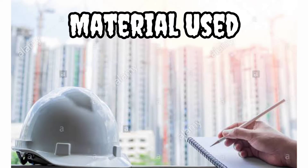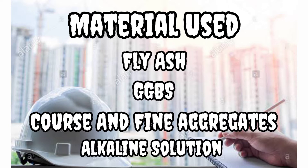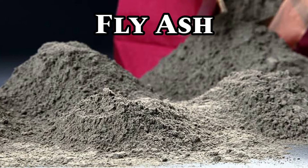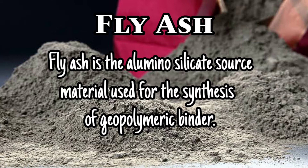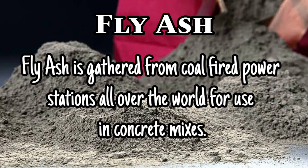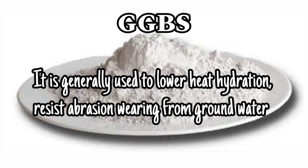Materials we used are fly ash, GGBS, coarse aggregate, fine aggregate, and alkaline solutions. Fly ash is an aluminum silicate source material used for synthesis of geopolymeric binder, gathered from coal-fired power stations all over the world. GGBS — Ground Granulated Blast Furnace Slag — is another industrial by-product commonly used in OPC concrete mix design.